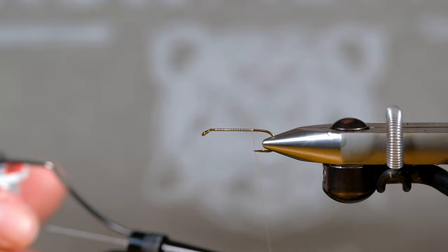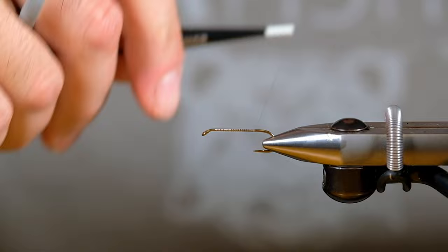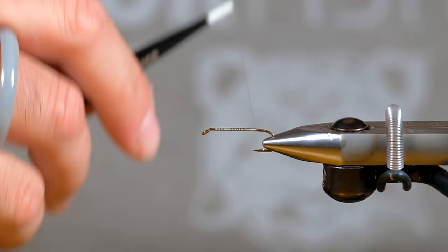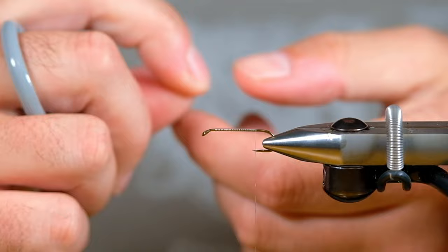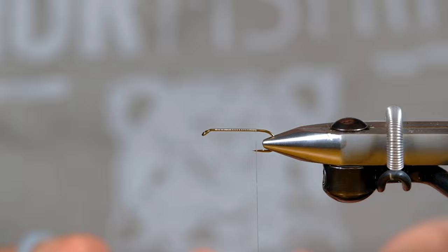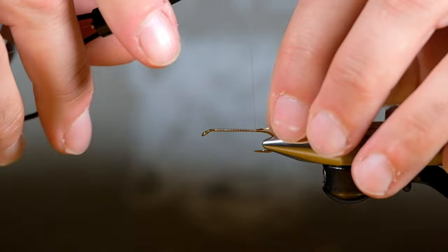So I'm using UTC Ultra 70, a little bit of a thinner thread but very strong, which I like. First thing we're gonna do is put gold mylar on, and I'm using a really thin one, I think it's a 16 uni mylar.